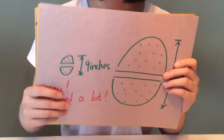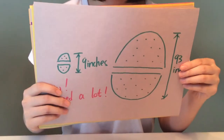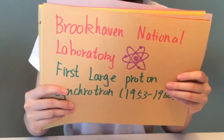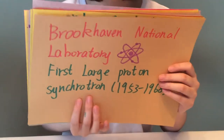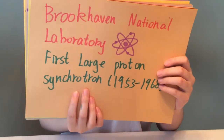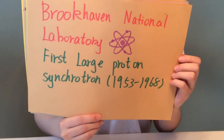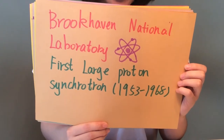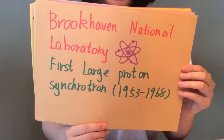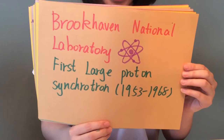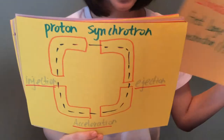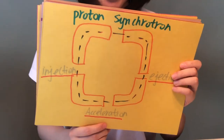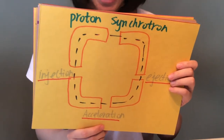Soon after Lawrence built the first cyclotron, the first large proton cyclotron was built in Brookhaven National Laboratory. It could accelerate protons to about 3 GeV. The proton cyclotron is square-shaped with acceleration, injection, and ejection gaps.